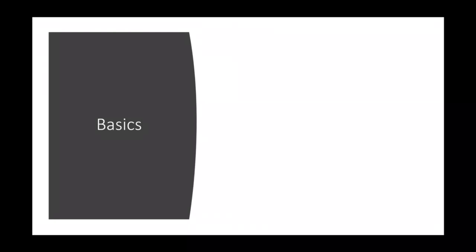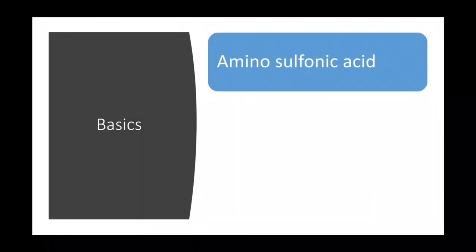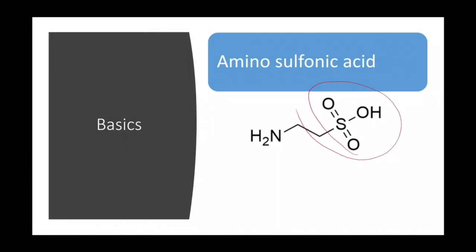There are many special products derived from amino acids. One among them is taurine, which we will discuss in this video. Taurine is an amino sulfonic acid — it is a derivative of amino acid. Amino acids contain an amino group and a carboxylic acid group, whereas taurine contains a sulfonic acid group instead of a carboxylic acid group.